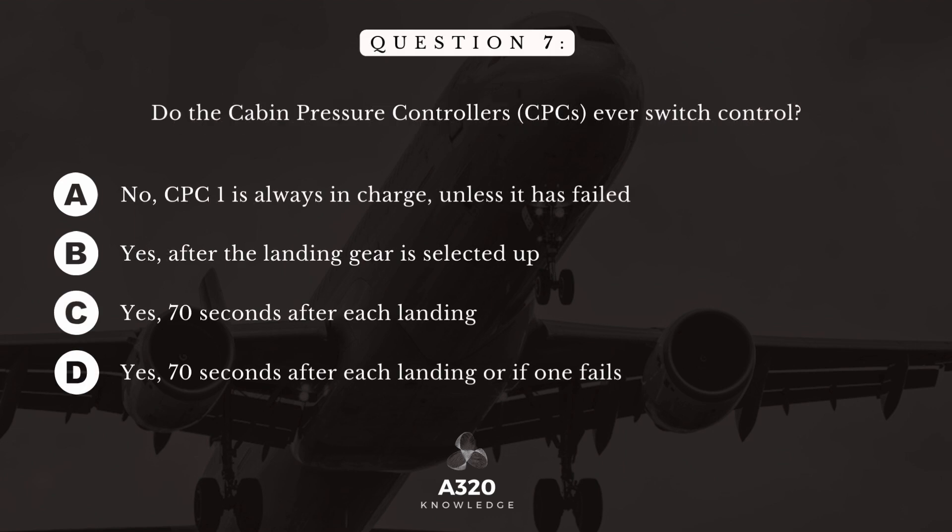Question 7. Do the cabin pressure controllers ever switch control? A. No. CPC-1 is always in charge unless it has failed. B. Yes. After the landing gear is selected up. C. Yes. 70 seconds after each landing. D. Yes. 70 seconds after each landing or if one fails.